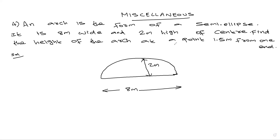2 meters high at center. Now the question is: find the height of the arc at a point 1.5 meters from one end. So, 1.5 meters from one end — total distance is 8 meters.